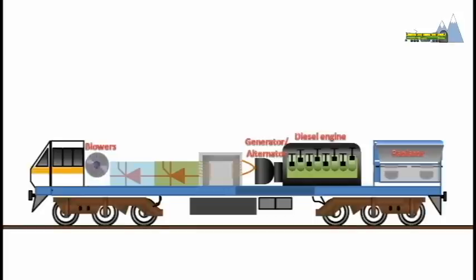The alternating current is set to the required voltage by a transformer. The alternating current from the transformer is fluctuating and cannot be fed directly to the traction motors. Therefore, a rectifier converts it to direct current.